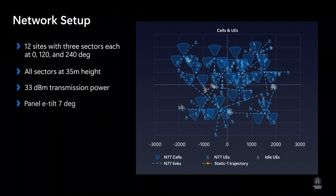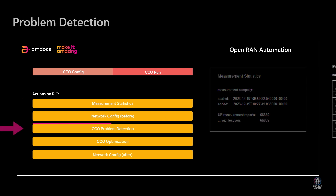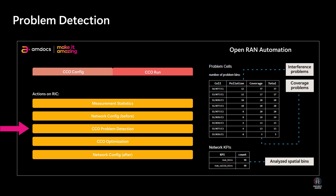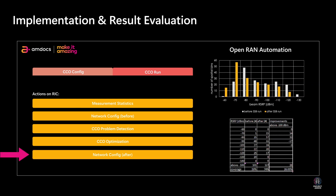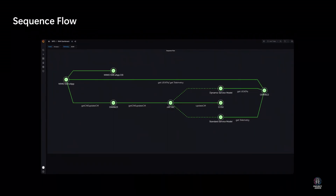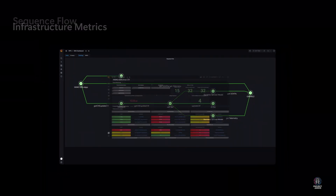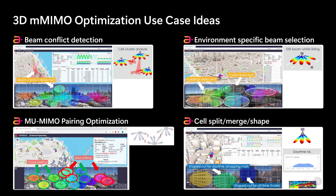The use case network setup has 12 sites with three sectors each. Amdocs' X-App detects the interference and coverage problems across the cell cluster and determines eight sectors in the cluster require grid-of-beams optimization based on its algorithm. Amdocs' X-App implements the new configuration on the radio cells and the RAN engineer evaluates the results. With the fine-grained telemetry from the dynamic service models, additional coverage within the cell cluster can be achieved. This can be verified in Amdocs' network platform for operations, which provides CSPs with a comprehensive view of the network and services, including E2 dynamic service models and Amdocs' X-App. This demo shows how Microsoft, Amdocs, and Juniper are able to improve network coverage through fine-grained telemetry, opening further opportunities for other use cases to be explored by X-App vendors.